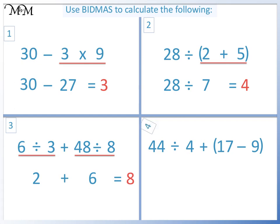Question 4. We have B for brackets, so we work this out first. 17 take away 9 equals 8. Continuing with BIDMAS, the next letter that we have is D for division. 44 divided by 4 equals 11. 11 plus 8 equals 19.